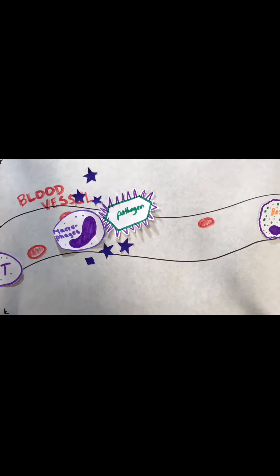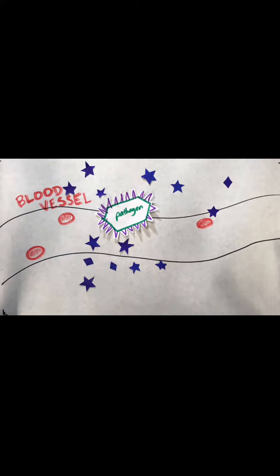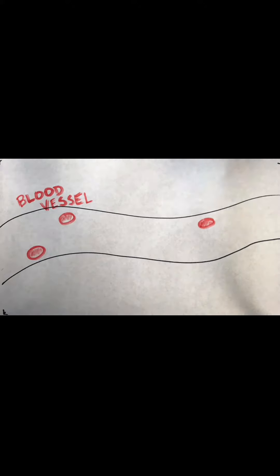This triggers other immune cells like mast, basophil, and eosinophil to come in and release cytokines. Cytokines increase the blood flow to that area and neutrophils come in and destroy the pathogen.